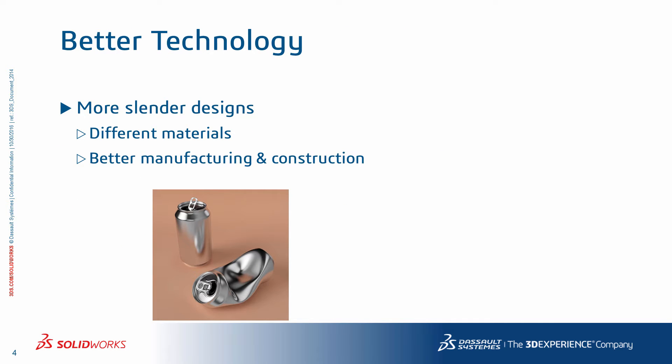Thinking of the significance of buckling from a historical perspective, this potential mode of failure is more critical today than it used to be. This is because with the advancement of technology, we are designing more slender members because we can. We use different materials with better manufacturing to reduce cost, save energy, improve efficiency, or even for better aesthetics.